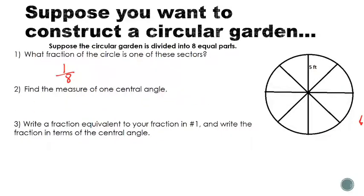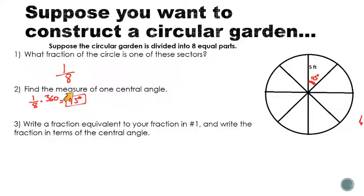If I ask you to find the measure of one central angle, I know there are eight equal central angles making up the whole circle, and if you add them all together they total 360 degrees. So the angle we're looking for is one eighth of 360, which is 45 degrees. We can write this as a ratio: one sector out of eight equals 45 degrees out of 360. This ratio is what we'll use to develop our formula.